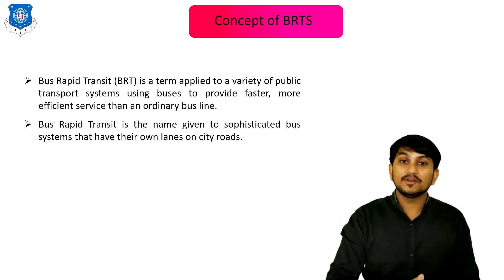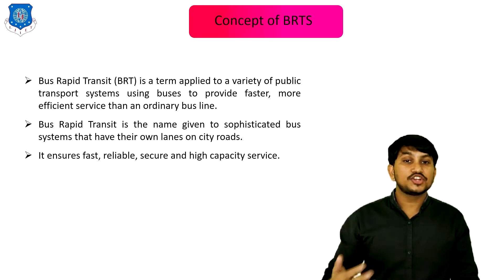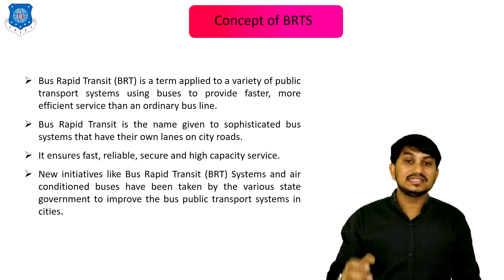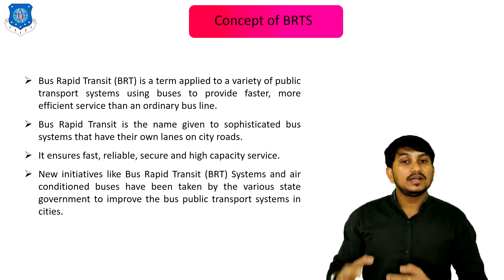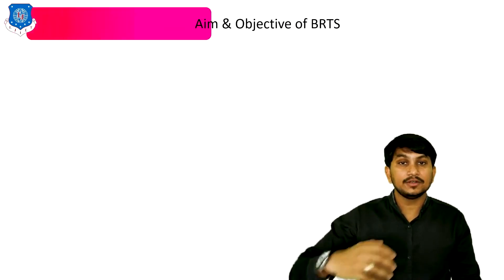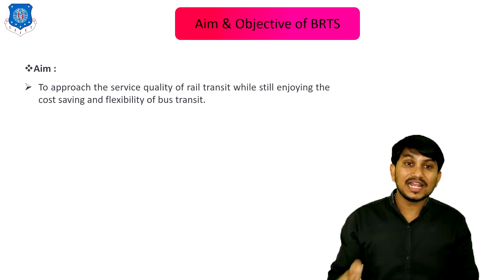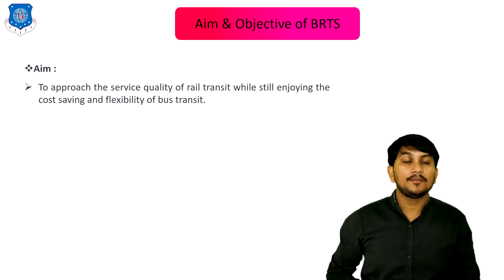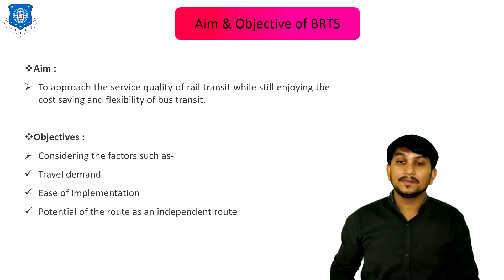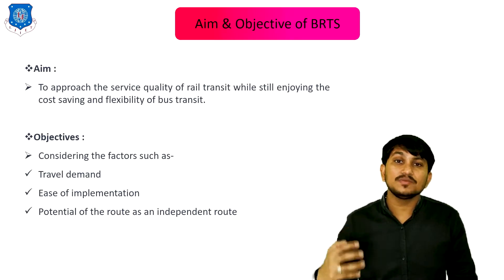Bus Rapid Transit is the name given to sophisticated bus systems that have their own lanes on city roads. It ensures fast, reliable, secure, and high-capacity services. New initiatives like BRTS systems and air-conditioned buses have been taken by various state governments to improve the BRTS system in cities. The aim of BRTS is to approach the service quality of rail transit while still enjoying the cost savings and flexibility of bus transit. The objectives are determined by considering factors such as travel demand, ease of implementation, and potential of the route as an independent route.